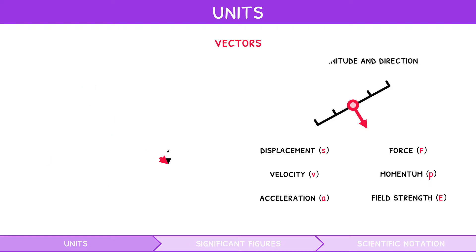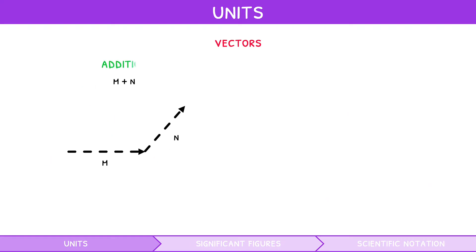It is important to understand that vectors can undergo addition or subtraction with other vectors. This is done with the head-tail rule, where the head of the first vector is connected to the tail of the second vector. Doing so creates the start and end points of the resultant vector.